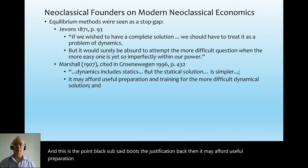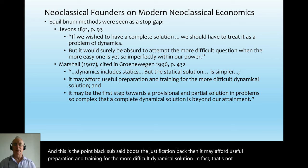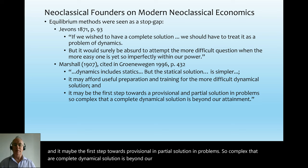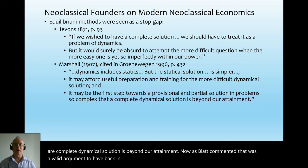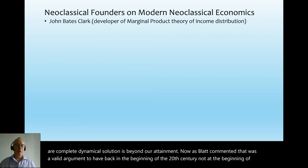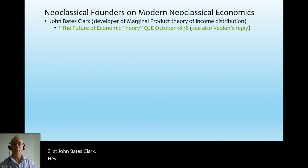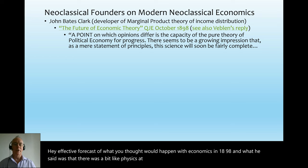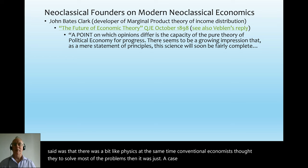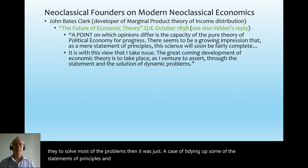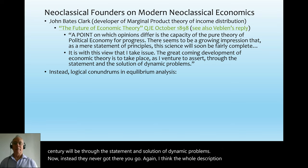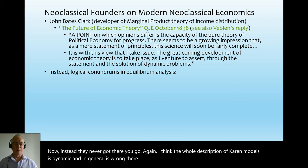Marshall in 1907 said dynamics includes statics, but the static solution is simpler and may afford useful preparation for the more difficult dynamical solution. As Blatt commented, that was a valid argument at the beginning of the 20th century, not the 21st. John Bates Clark in 1898 forecast that the great coming development in economics would be through the statement and solution of dynamic problems. Instead, economists never got there. The description of current models as 'dynamic' and 'general' is wrong — they are stochastic equilibrium models, not dynamic and not general.